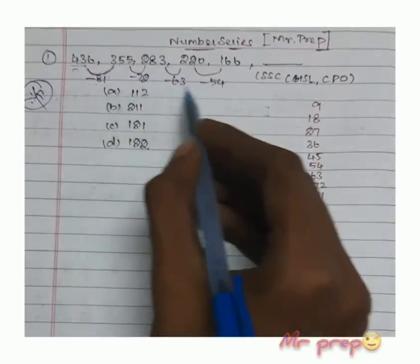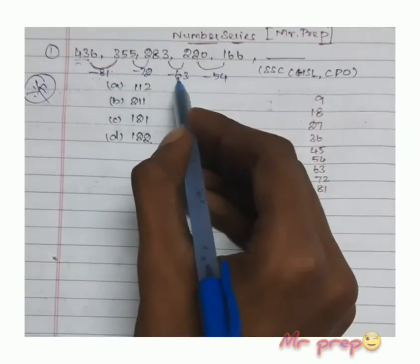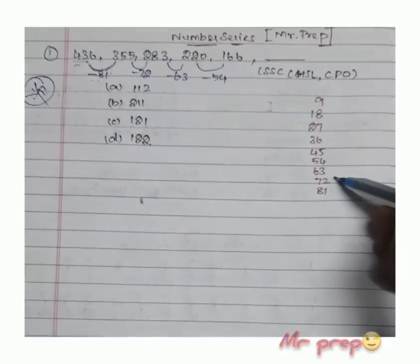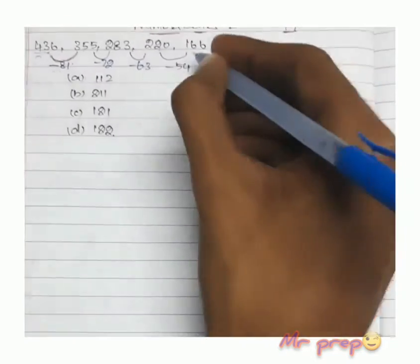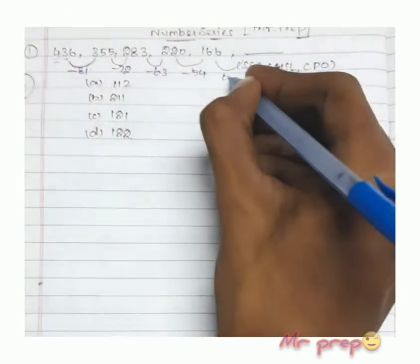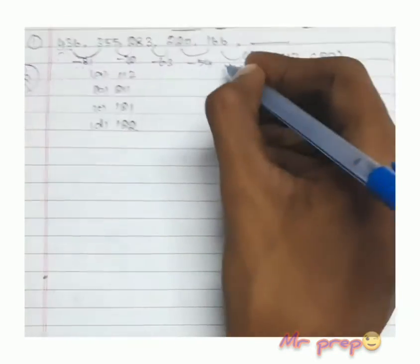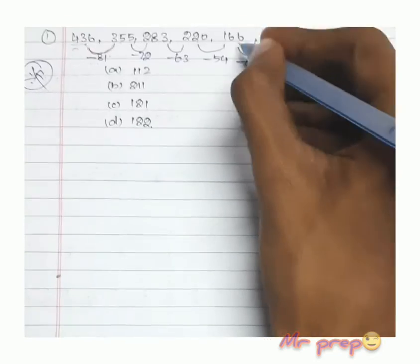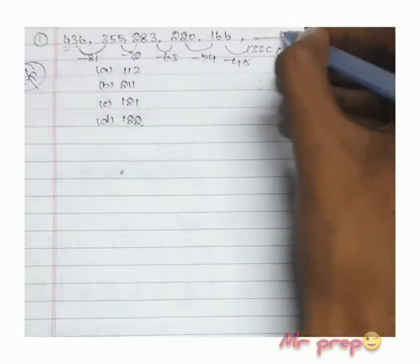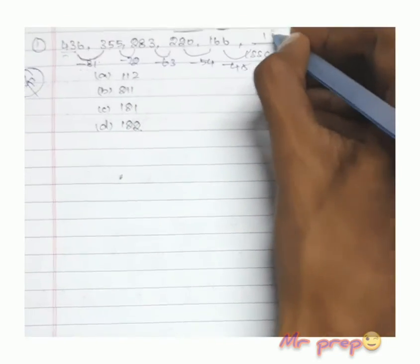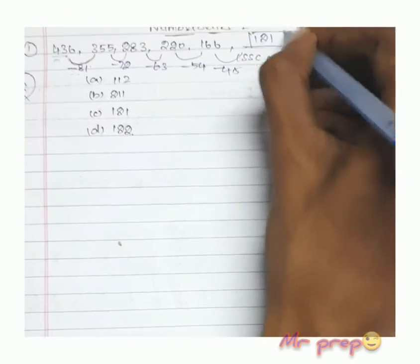Now we will talk about the 9-times table series: 81, 72, 63, 54. We will see which number is missing, and that is our answer. The answer is 1, 2, 1.